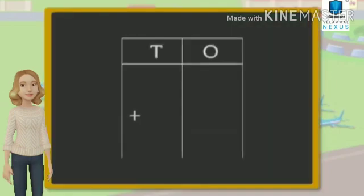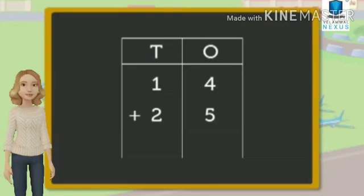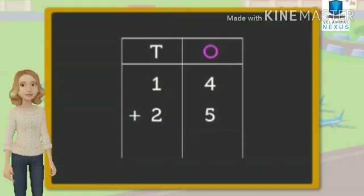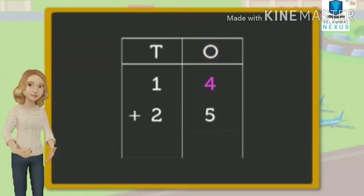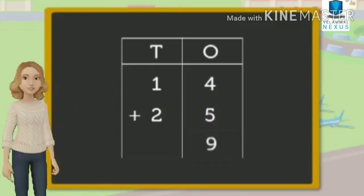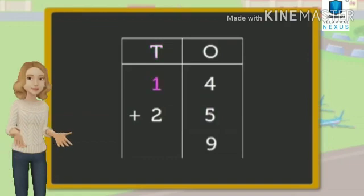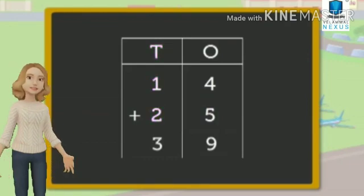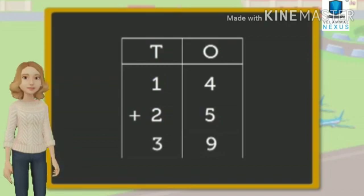So, by arranging the numbers in the placement chart, we get 14 plus 25. We need to add 14 and 25 by beginning with the number of digits in the ones place - we have 4 and 5. So, 4 plus 5 gives you 9. Then moving on to the tens place, we have 1 and 2. So, 1 plus 2 gives you 3. So, we get an answer 39.